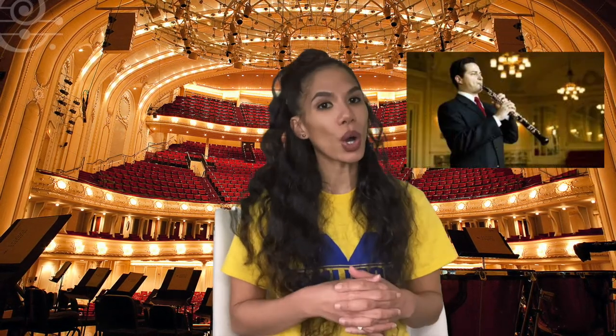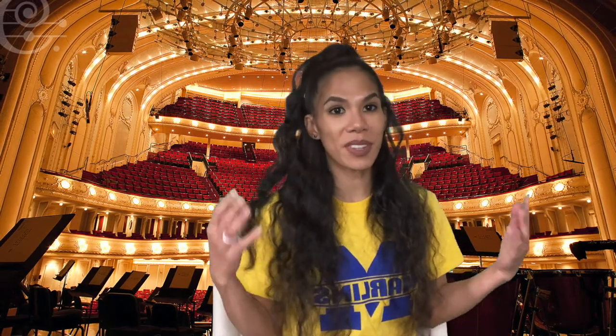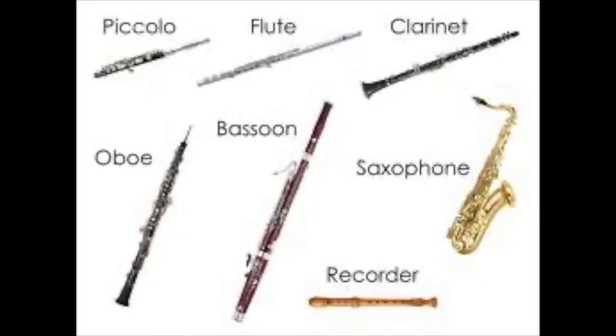Next up we have the woodwind family. Instruments that are part of the woodwind family are the flute, piccolo, oboe, clarinet, the bassoon, and also the saxophone. The instruments in the woodwind family all used to be made of wood, which gives them their name. Today, however, they are made of wood, metal, plastic, or some combination. They are all basically narrow cylinders or pipes with holes, an opening at the bottom end, and a mouthpiece at the top.